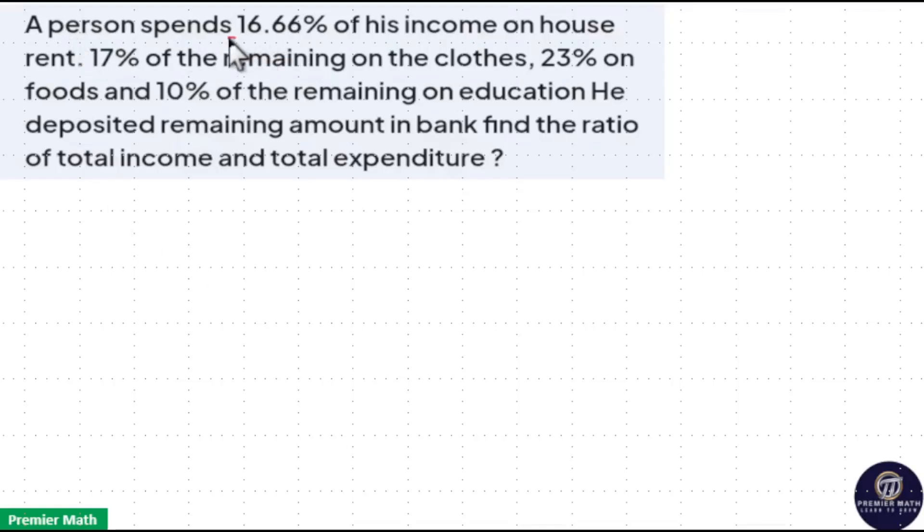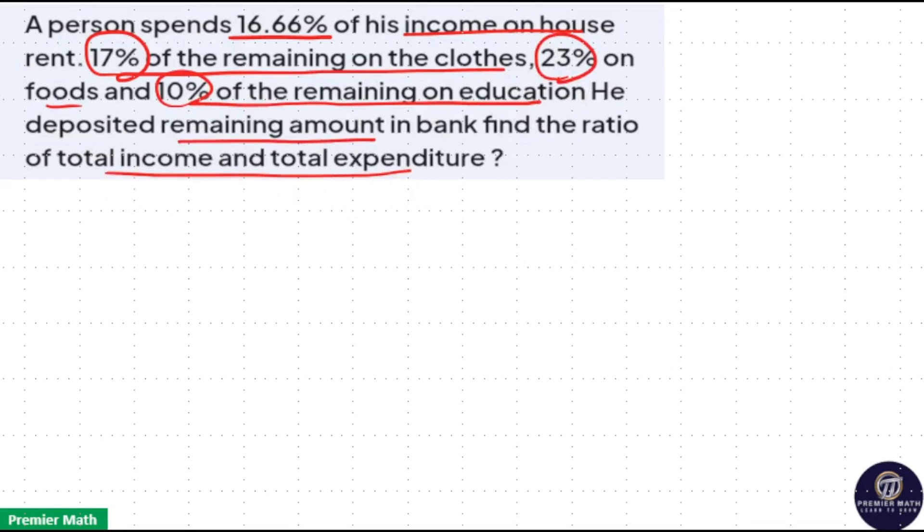A person spent 16.66% of his income on house rent, 17% of the remaining on cloth, 23% on foods and 10% of the remaining on education. He deposited the remaining amount in bank. Find the ratio of total income and total expenditure. Here always be careful about the word remaining.